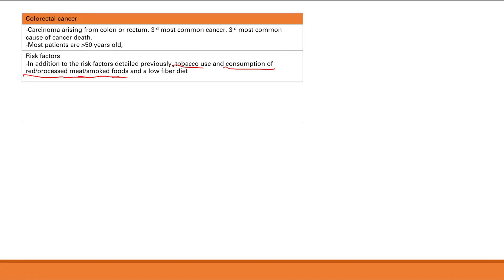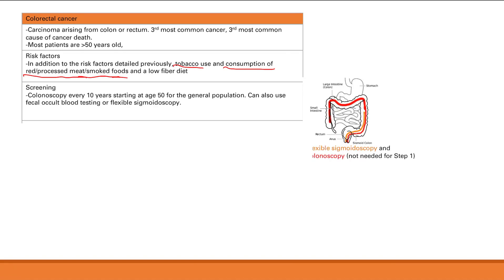Screening starts at age 50 for the general population with colonoscopy every 10 years, since polyps start forming around age 50 and take 10 years to transform into carcinoma. Other screening options include fecal occult blood testing — checking for blood in the stool from cancer-associated bleeding — and flexible sigmoidoscopy, which only visualizes the sigmoid colon, unlike colonoscopy which examines the entire colon.